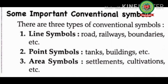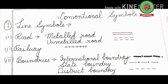There are three types of conventional symbols: number one — line symbols, number two — point symbols, and number three — area symbols. First, line symbols refer to road, railways, boundaries, etc. For roads, there are two types: number one — metal road (pakka road), depicted with two red lines; and number two — unmetal road (kaccha road), depicted with two broken red lines.